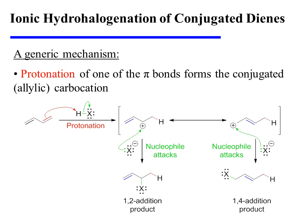The reaction begins with the protonation of one of the diene's pi bonds, and this results in the formation of the conjugated or allylic carbocation.